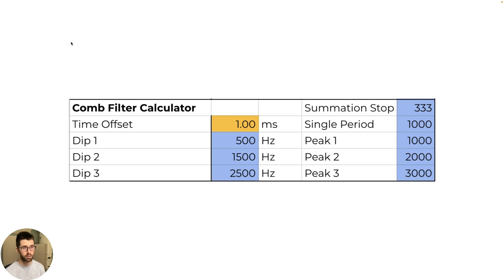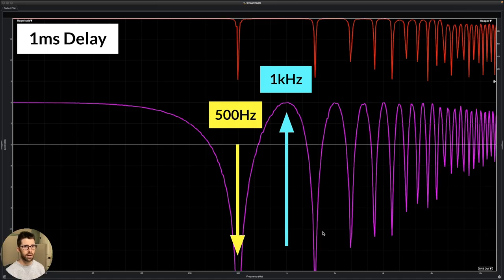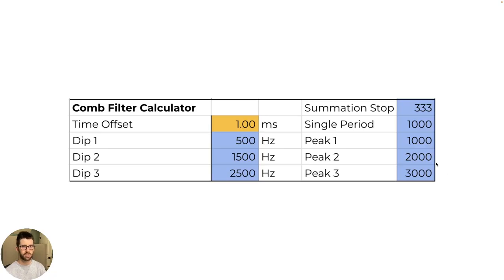The comb filter calculator on my spreadsheet, you could get the first three dips and the first three peaks by putting in the amount of time offset. One millisecond of delay, put that here, it's going to tell you those first three. The first peak is the length of a single period at that amount of time offset, and then we just keep adding it to itself. So 1000, 2000, 3000, 4000, 5000, and we're seeing a linear phenomenon over a logarithmic scale. Every doubling in frequency moves up an octave, but this is a linear phenomenon, just adding another thousand.